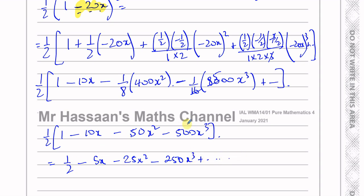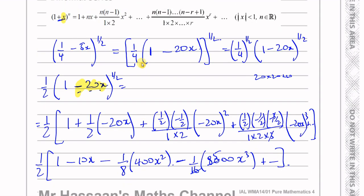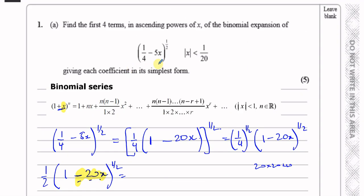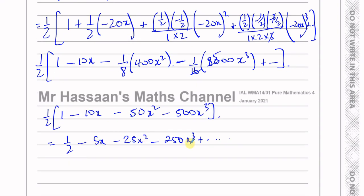Multiplying through by the half outside, we get the answer to part A: 1/2 minus 5x minus 25x² minus 250x³, giving each coefficient in its simplest form.